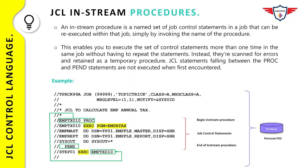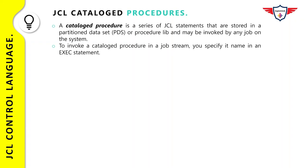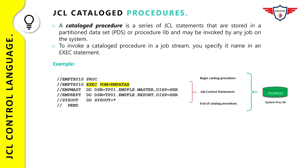A catalog procedure is a series of JCL statements stored in a partitioned data set or a PROC library. Catalog procedures can be invoked by any JCL on the system. However, an in-stream procedure can only be invoked from the JCL in which it is defined — that's the basic difference between an in-stream PROC and a catalog procedure. Catalog procedures can be stored in the system procedure library, SYS1.PROCLIB, which is used to store IBM-supplied catalog procedures. You can also have catalog procedures in a private library; the name of the catalog procedure is its member name or alias in the library.